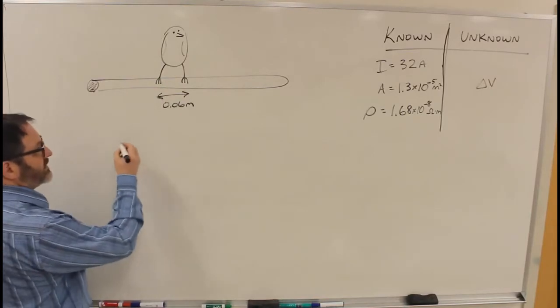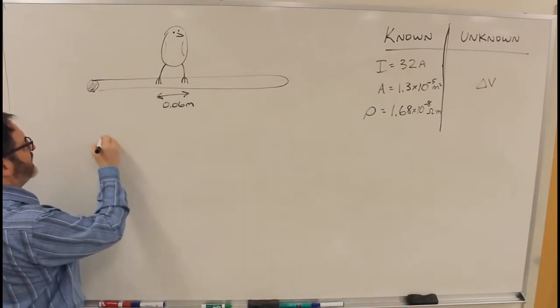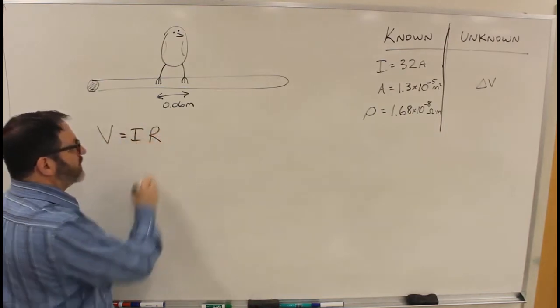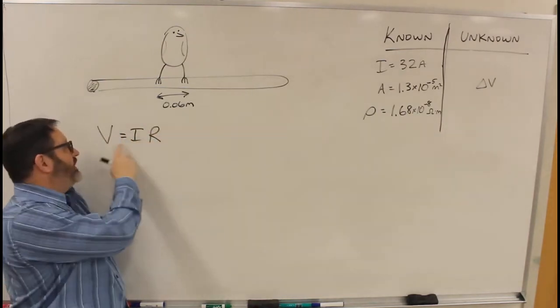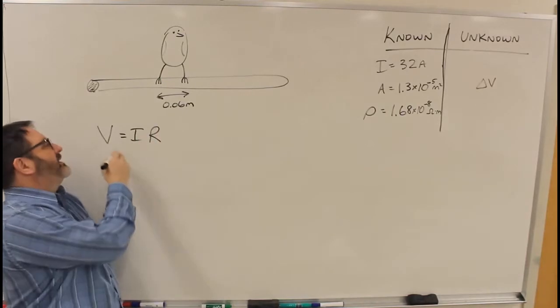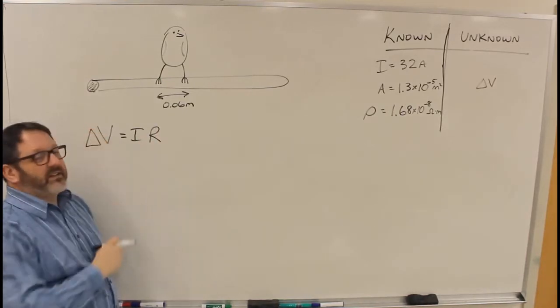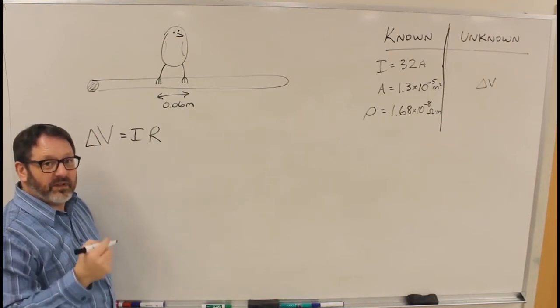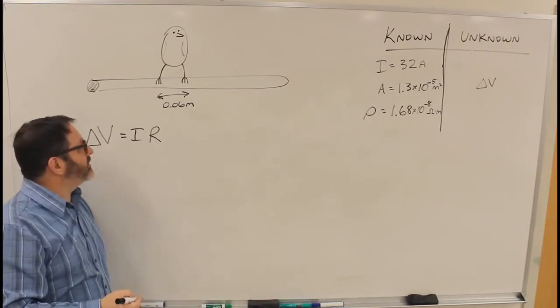All right. So what I want is that delta V. I'm going to need to use Ohm's law, V equals IR. In some of these equations delta V and V are kind of the same thing because V always refers back to some reference point.